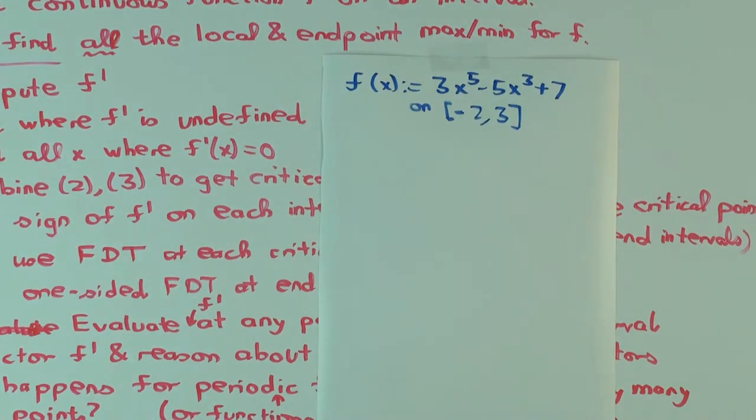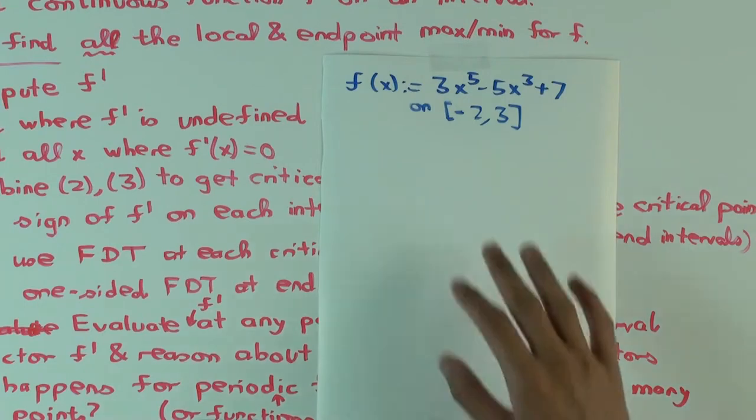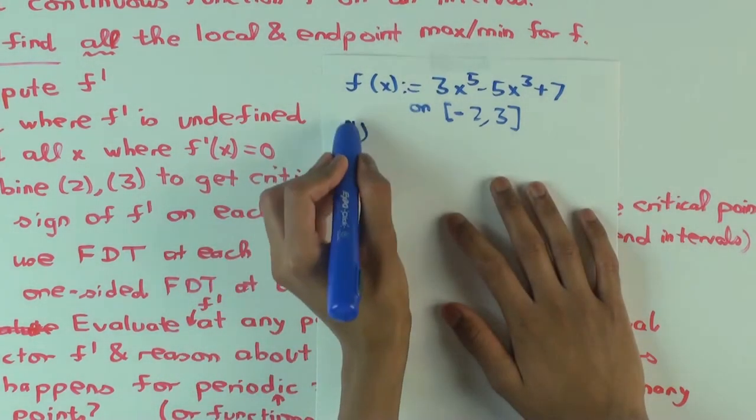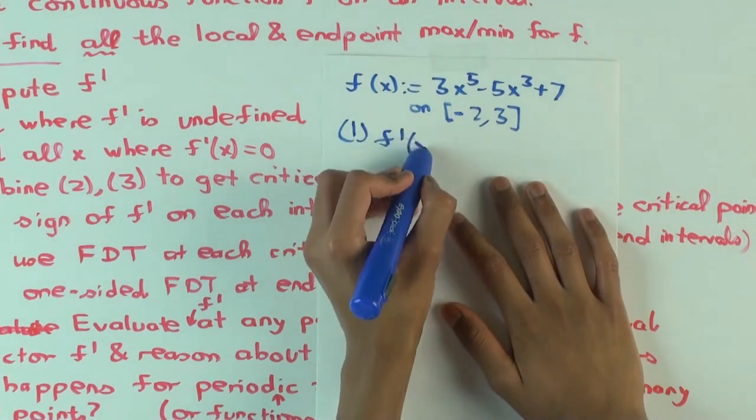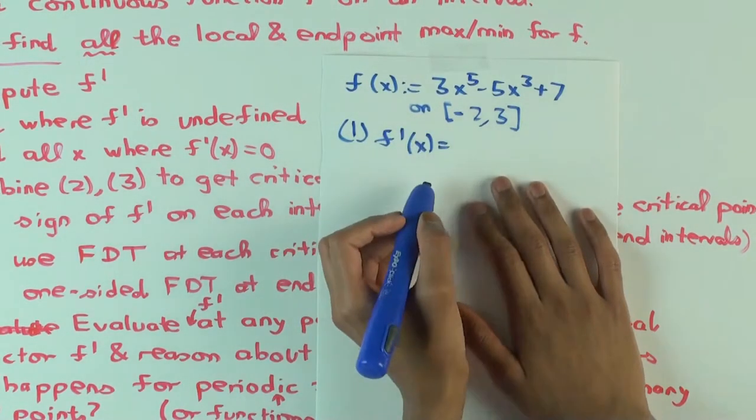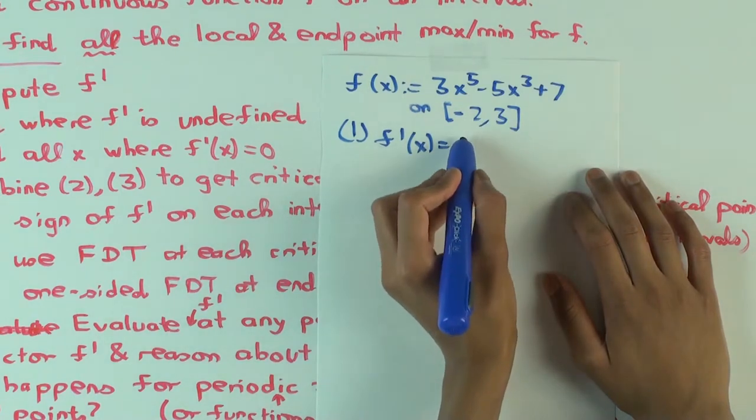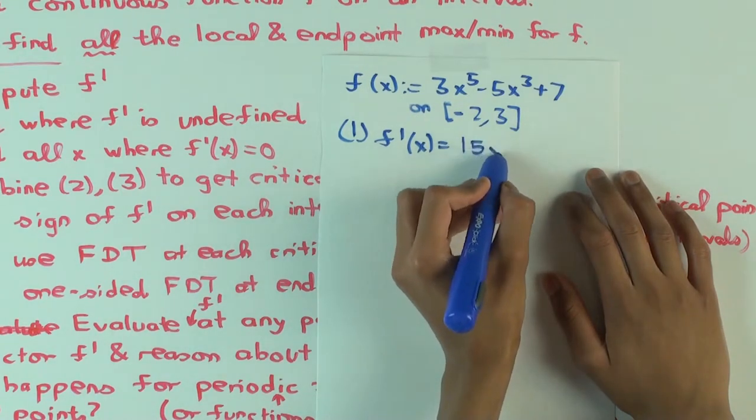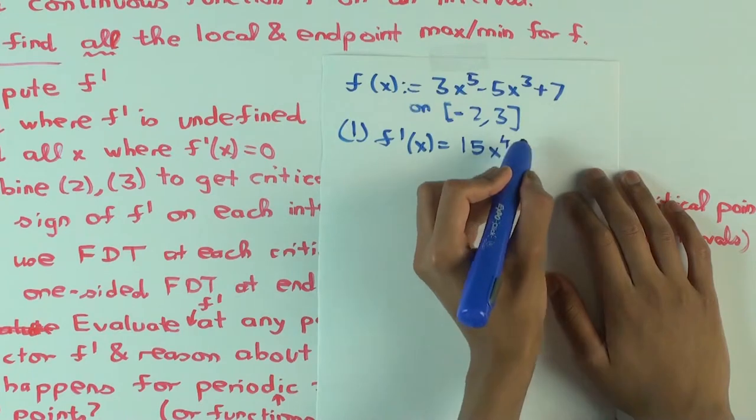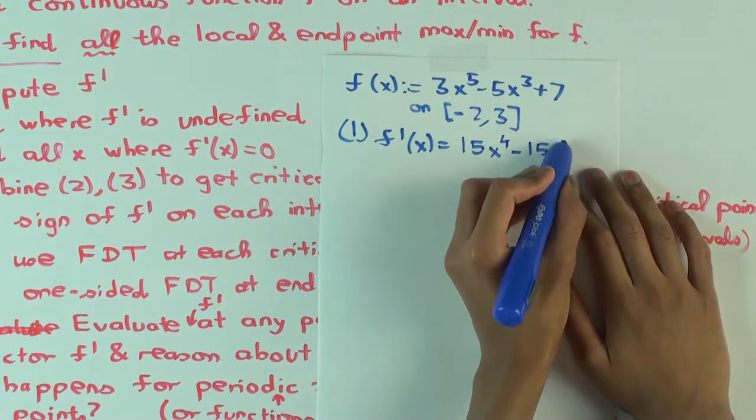So what do you do? What's the first step? F prime. Let's calculate F prime. If you differentiate a polynomial, differentiate it term-wise, what do you get? 15x to the 4th minus 15x squared.